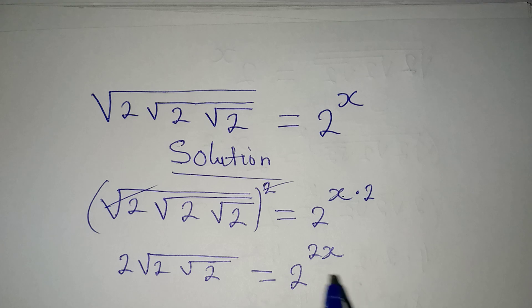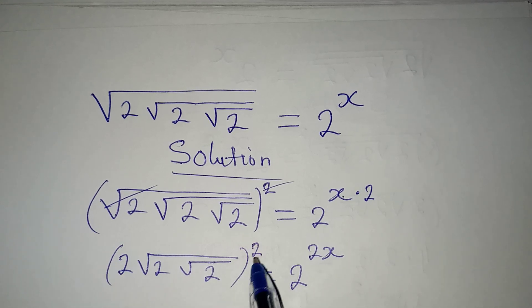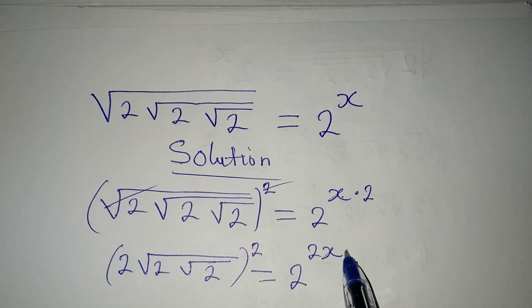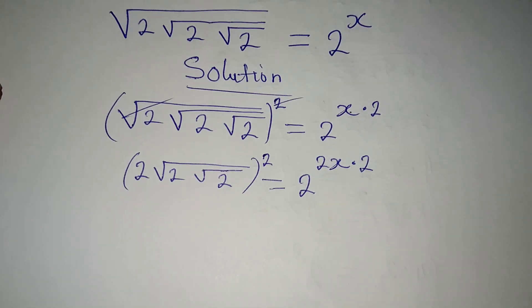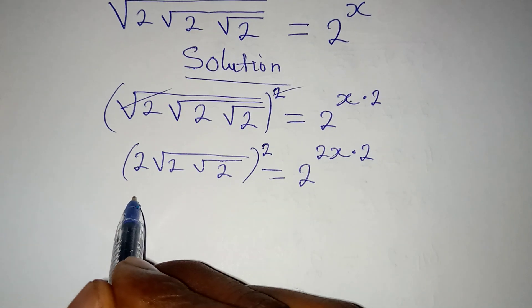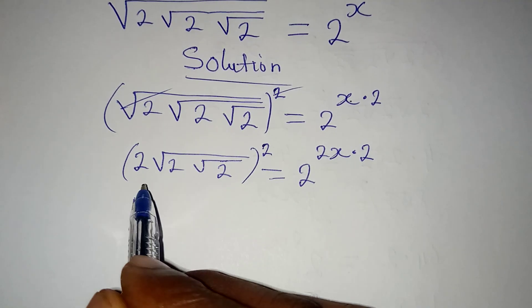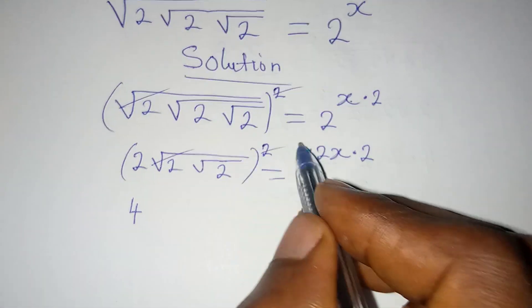Now, the next thing to be done is to square the left hand side again. I will square this, and I will multiply the power here by these 2 again. Now, if I take a step further, I am going to raise these 2 to this power, so I have 4, which is 2 to the power of 2. Then, this can cancel this.